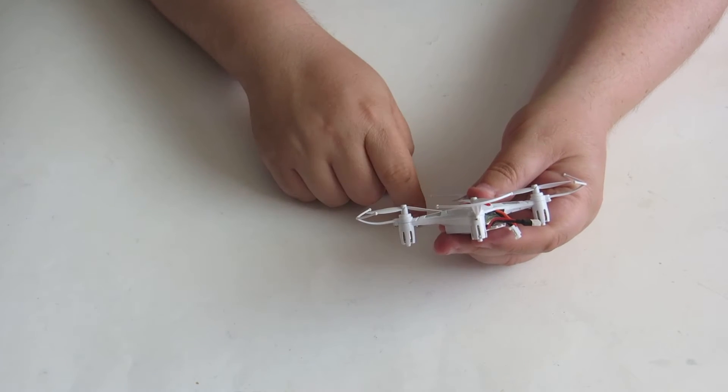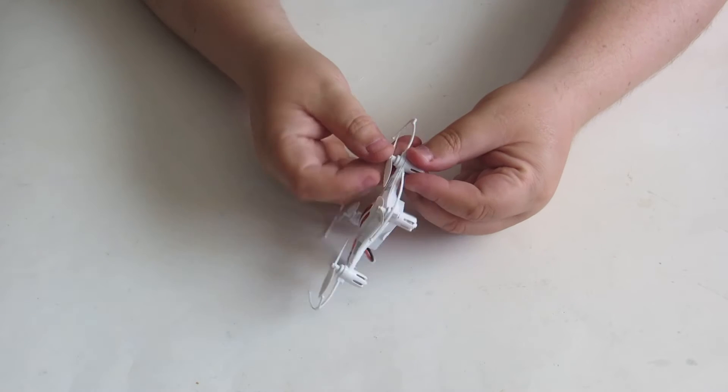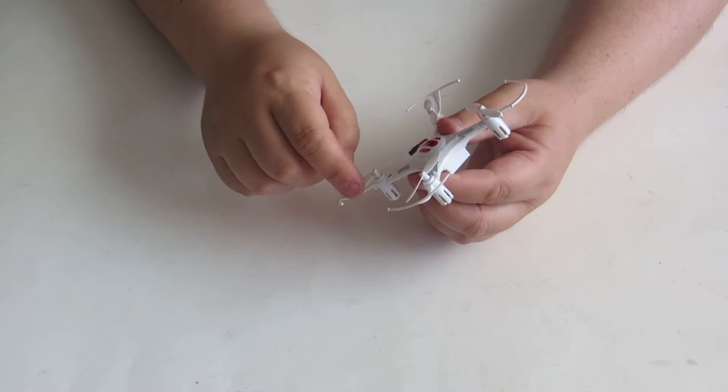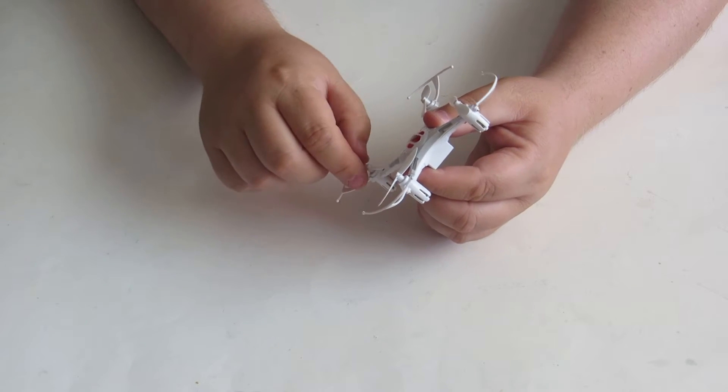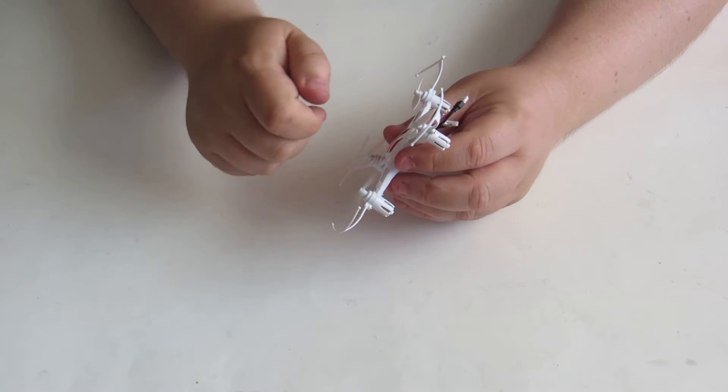More bent props. You want to go through all of them and bend them to the right shape and check that they spin freely. I had one prop that didn't spin freely but pulling it out a bit and it started working okay.